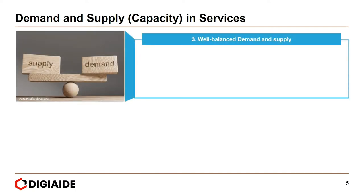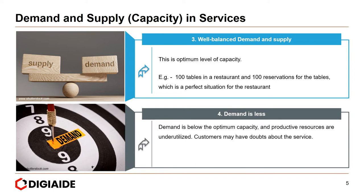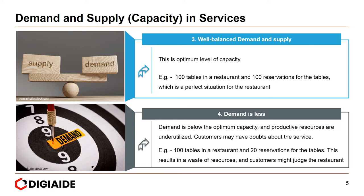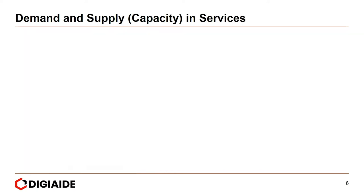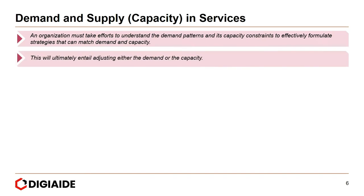Situation number three is well-balanced demand and supply — the optimum level of capacity. 100 tables and 100 reservations, which is a perfect situation for the restaurant, though highly unlikely in certain scenarios. The fourth situation: demand is below optimum capacity and productive resources are underutilized. Customers may even have doubts about the service — for example, 100 tables and only 20 reservations results in waste of resources. Thus, an organization must understand demand patterns and capacity constraints to formulate strategies that match demand and capacity, ultimately adjusting either demand or capacity.